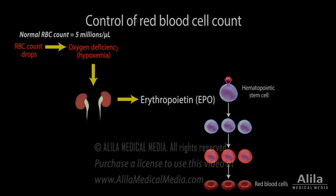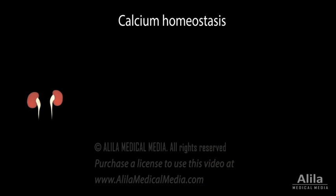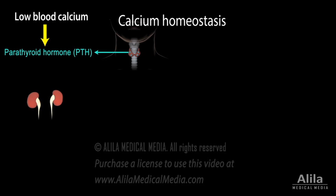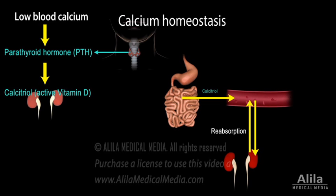The kidneys are also involved in calcium homeostasis. In response to low blood calcium levels, parathyroid hormone stimulates the kidneys to produce the hormone calcitriol. Calcitriol promotes absorption of dietary calcium in the small intestine and increases calcium reabsorption by the kidney.